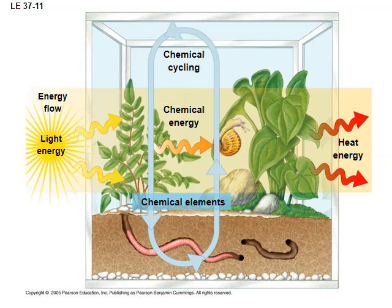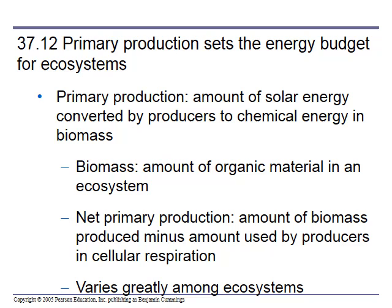Primary production sets the energy budget for the ecosystem. If you don't have a lot of primary producers, you can't have a lot of anything else. Primary production is the amount of solar energy converted by producers to chemical energy in biomass — that is basic photosynthesis: taking carbon dioxide, taking light, and making sugars. That's chemical energy stored in chemical bonds.